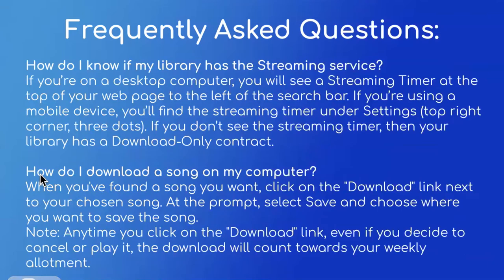Another question is: how do I know if my library has this streaming service? If you're on a desktop computer, you will see a streaming timer at the top of your webpage to the left-hand side of the search bar. If you are using a mobile device, you will find the streaming timer under settings, accessible via the three dots in the top right-hand corner. If you don't see the streaming timer, then your library has a download-only contract, meaning you will have to download the songs in order to listen to them.